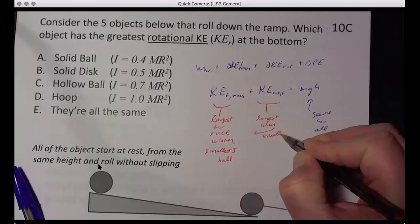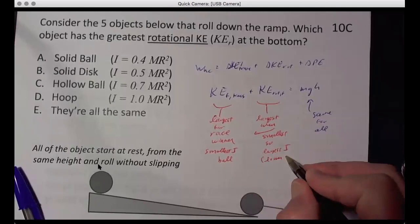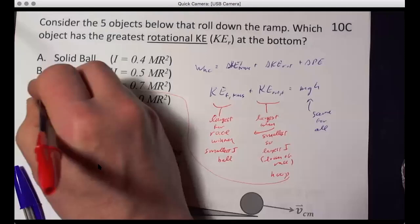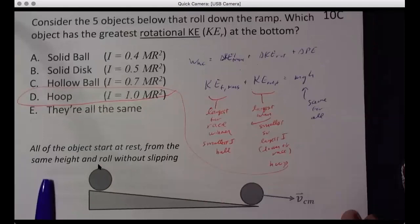So the largest I, the biggest loser in the race. And that is the hoop. And so it has the biggest rotational kinetic energy. That's why it doesn't have so much translational, because they have to add up to the same thing. And that's what happens at the bottom.